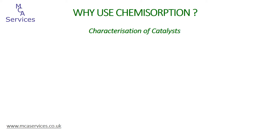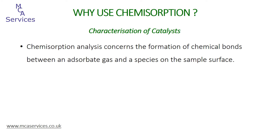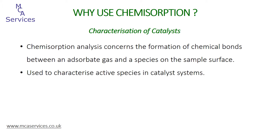So what is chemisorption analysis used for? Chemisorption concerns the formation of chemical bonds between an adsorbate gas and a species on the surface of the sample material. So unlike physisorption, the chemical nature of the sample is actually changed during the analysis. Chemisorption occurs really quite readily to transition metal surfaces.